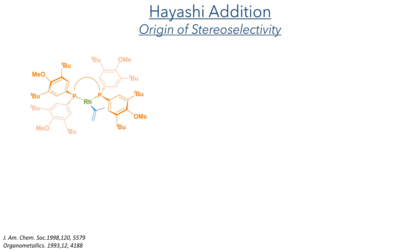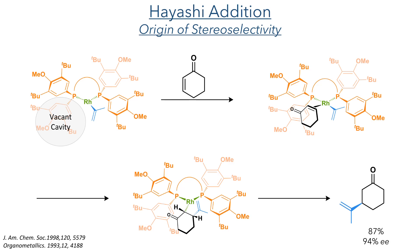The stereocontrol of this reaction arises from the conformation of the SEGPHOS ligand around the rhodium-allyl complex. Studies on a similar species have shown that there is a vacant cavity in these complexes, which allows the cyclohexenone to preferentially add from one face. The rhodium first forms a pi-complex, and this then intramolecularly delivers the allyl group in a stereoselective manner to generate the target product with 94% ee.